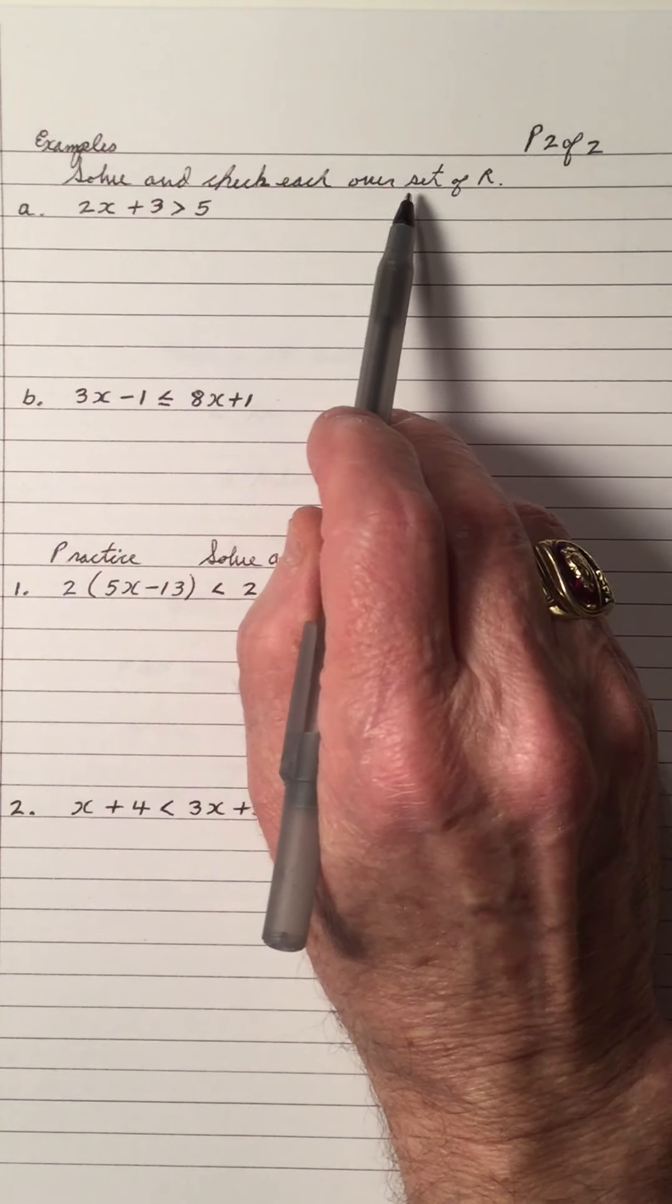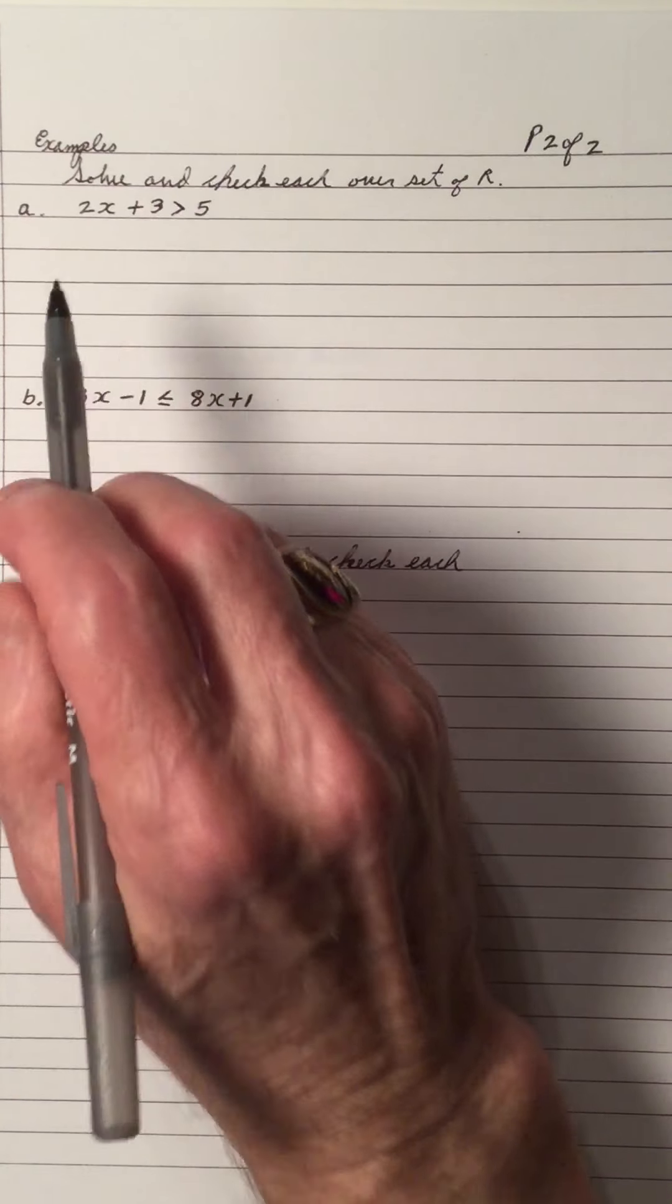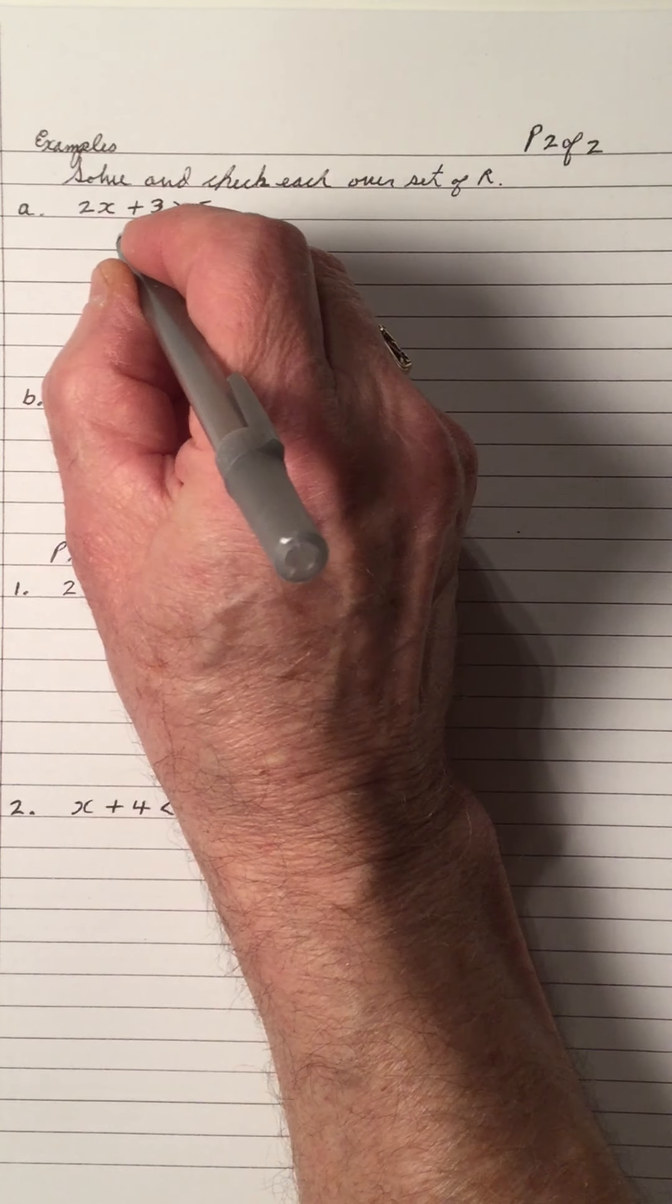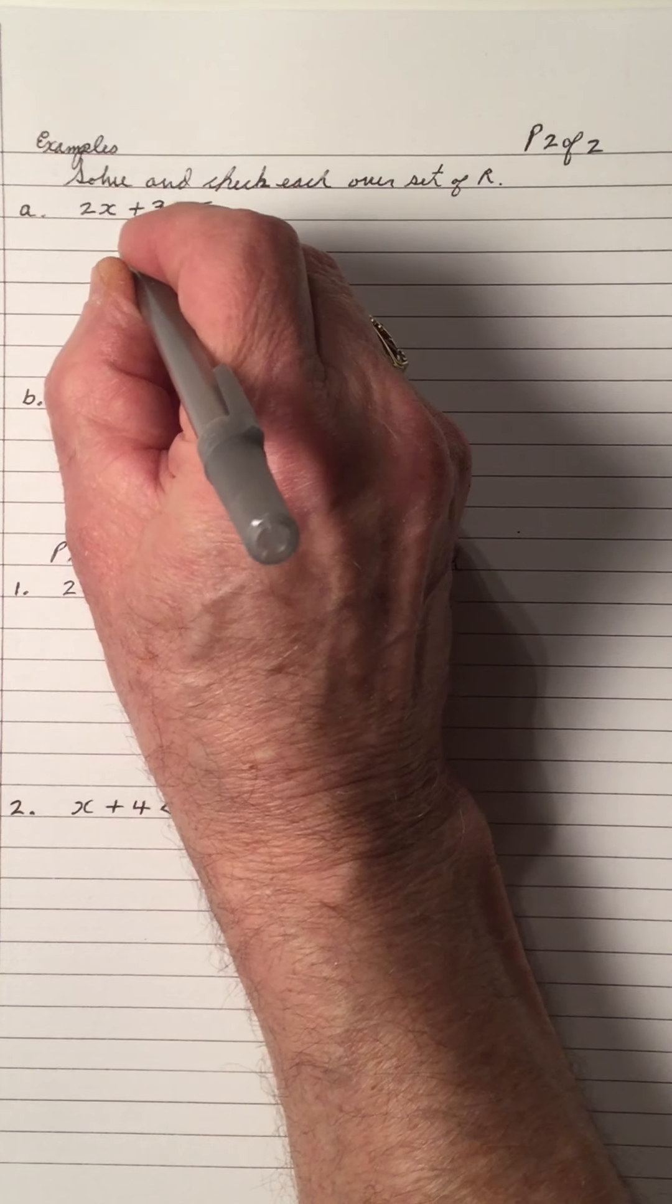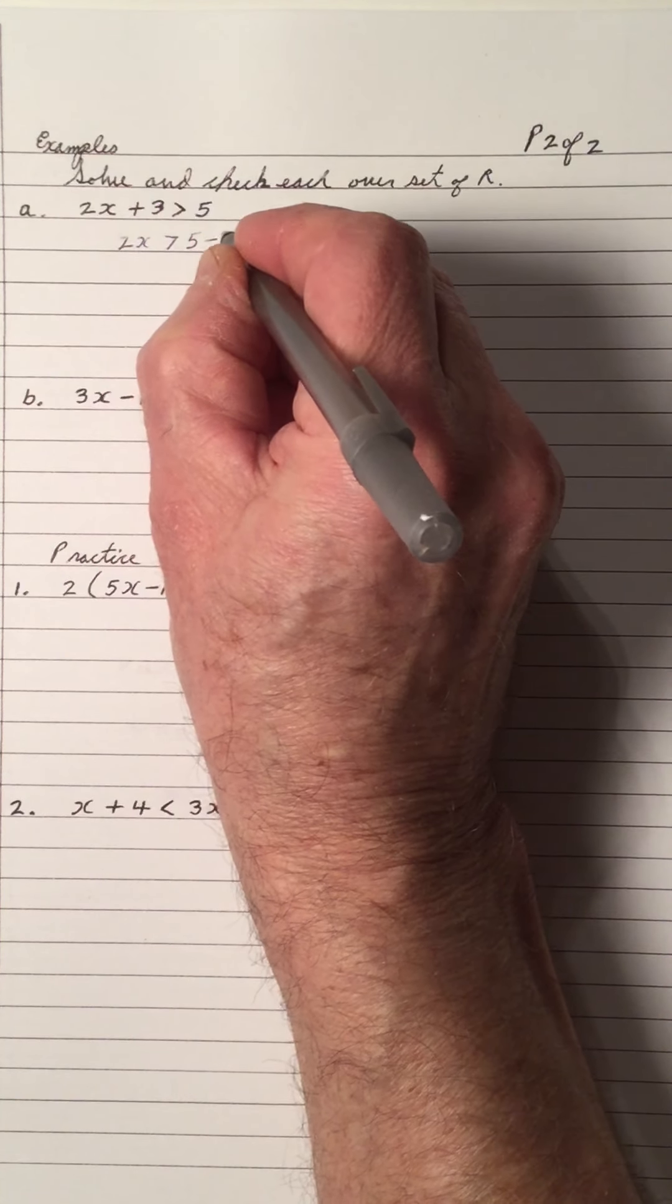Solve and check each over the set of real numbers. R stands for real numbers. A. The x is on the left side, so that's good.